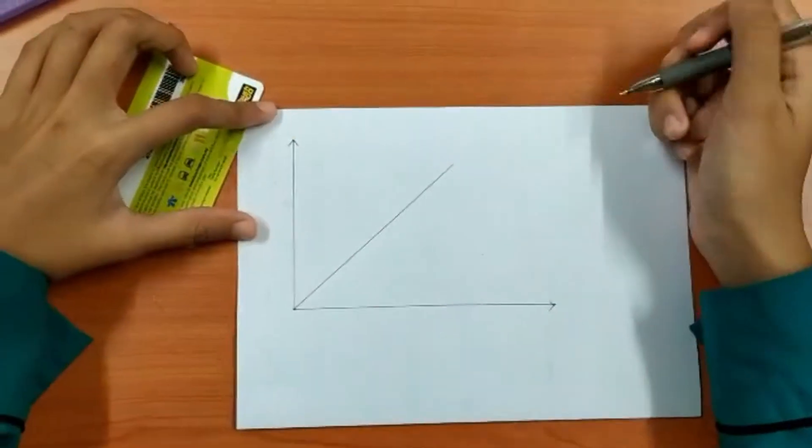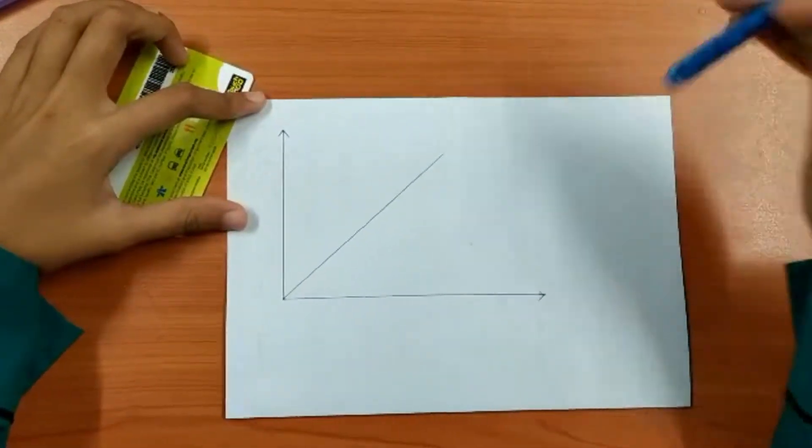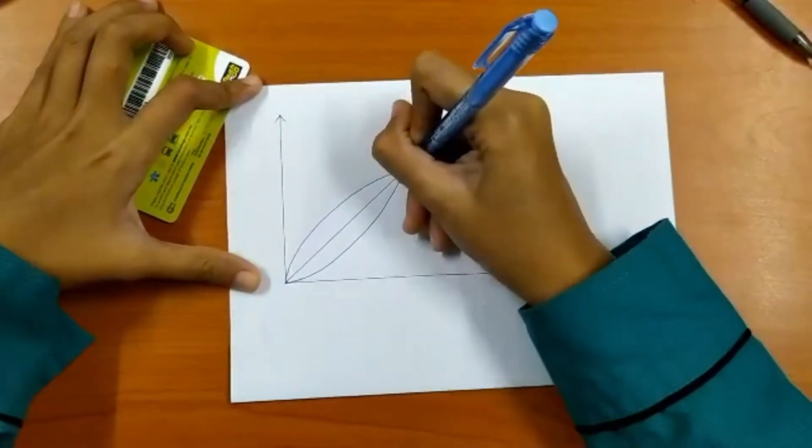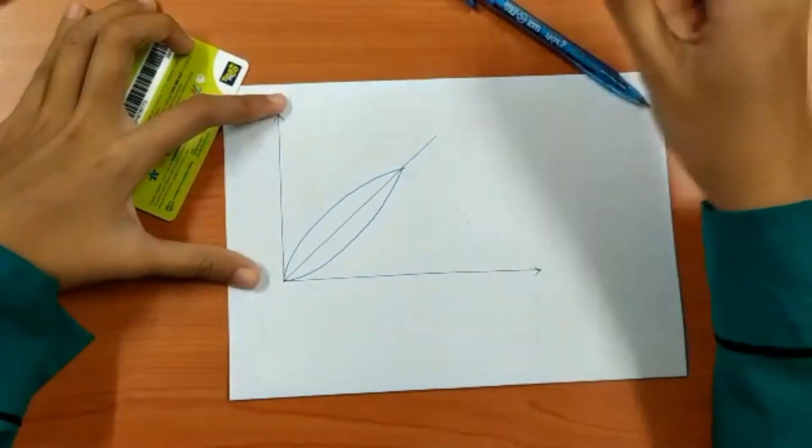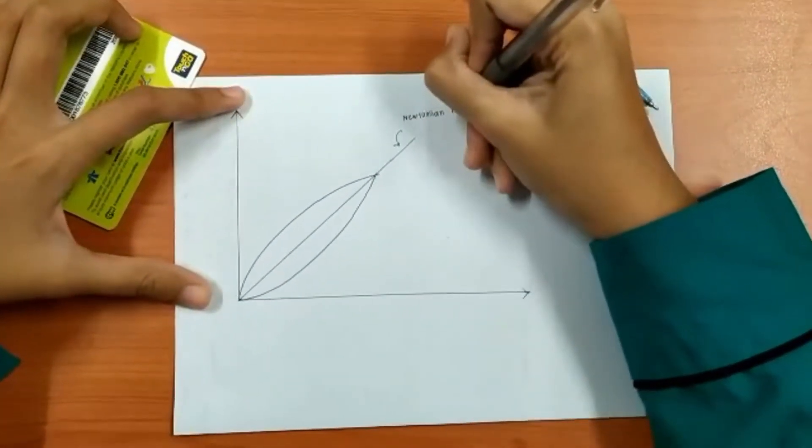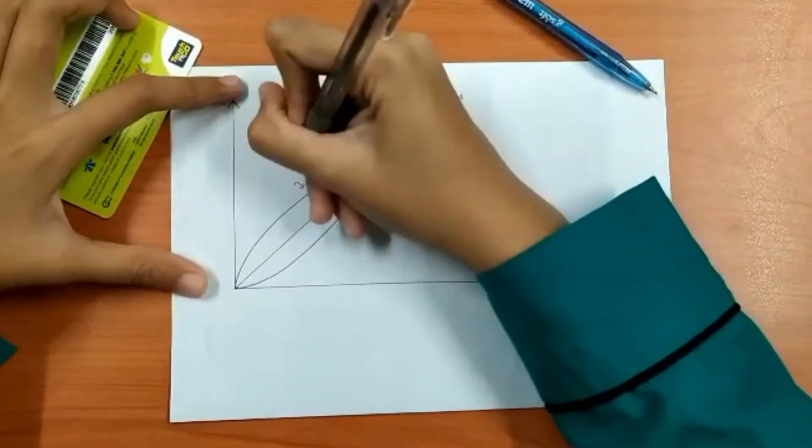The definition of the Newtonian fluid is fluid in which the viscous stresses arising from its flow at every point are linear. Fluid also obeying Newton's law of viscosity for which mu has constant value.